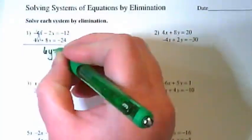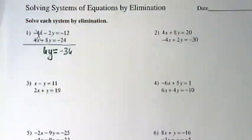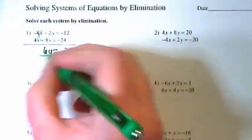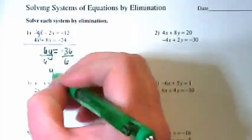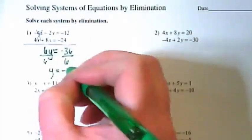So 6y is equal to negative 36. What can we do next? Divide by 6. Y is going to then be equal to negative 6.